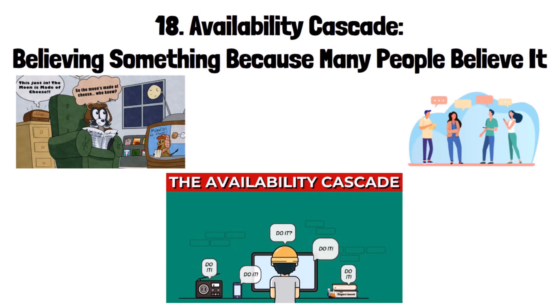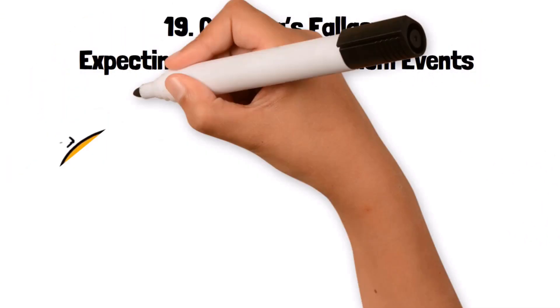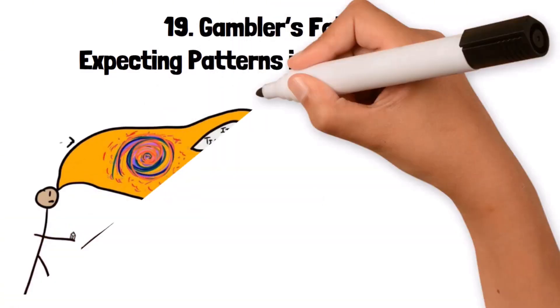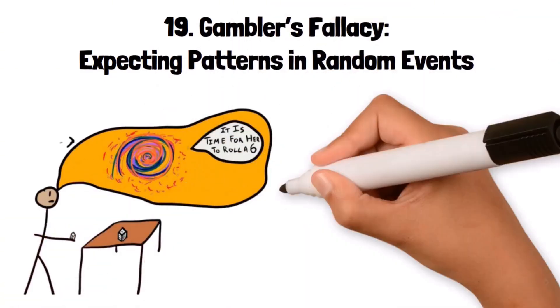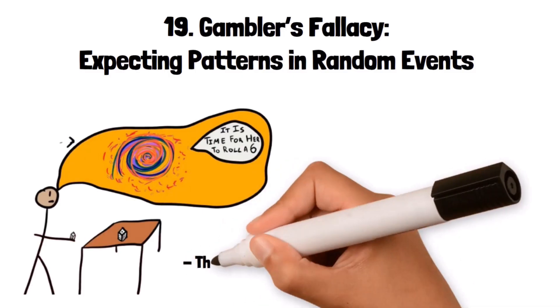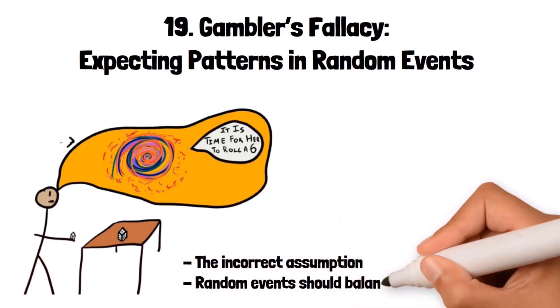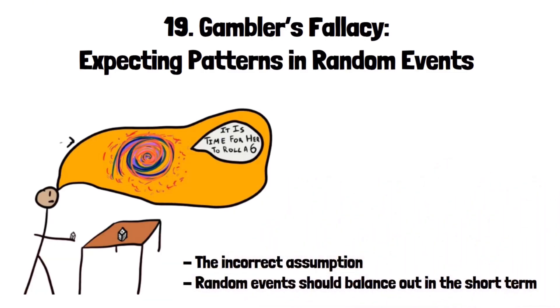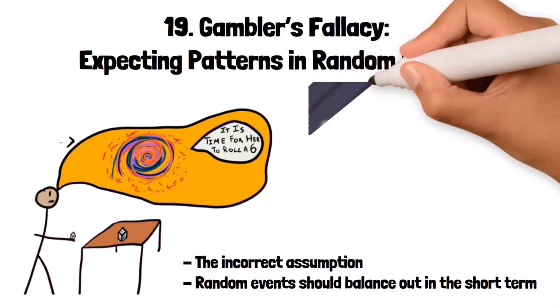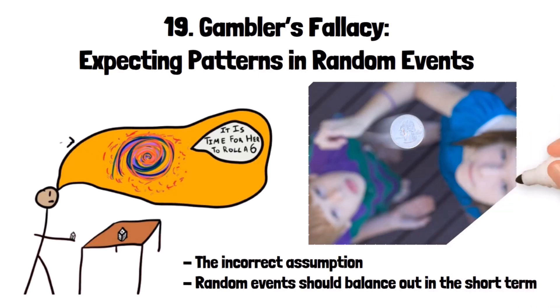19. Gambler's Fallacy: expecting patterns in random events. The gambler's fallacy is the belief that if something happens more frequently than normal during a given period, it will happen less frequently in the future, or vice versa. This bias stems from the incorrect assumption that random events should balance out in the short term. For example, if a coin lands on heads several times in a row, a person might incorrectly believe it is more likely to land on tails on the next flip, even though the odds remain 50-50.